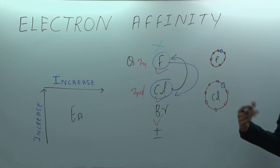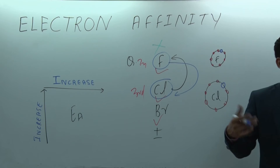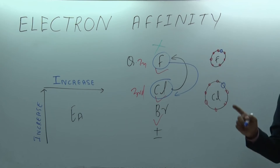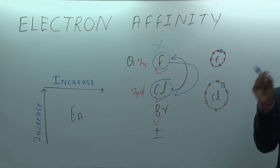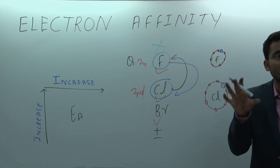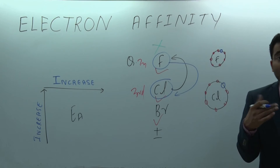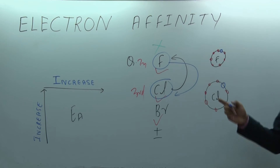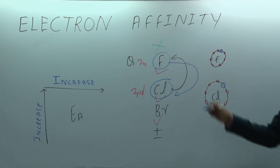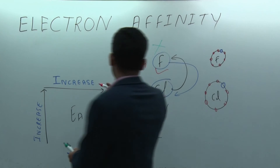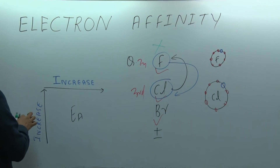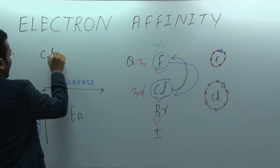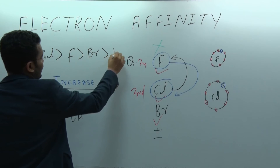So chlorine has higher electron affinity — more energy is released — compared to fluorine, because of repulsion between electrons. The force of attraction is the cause of energy release, while the force of repulsion decreases the released energy. Smaller size means more repulsion; larger size means less repulsion. Therefore the correct order of electron affinity is: Cl > F > Br > I.